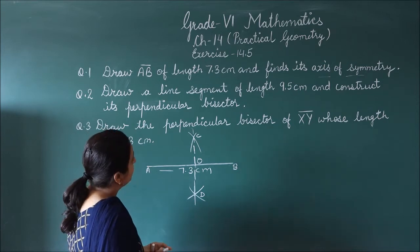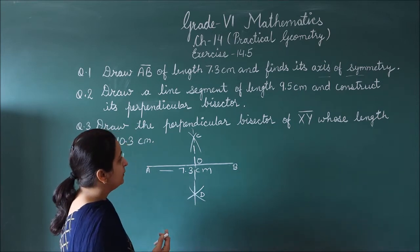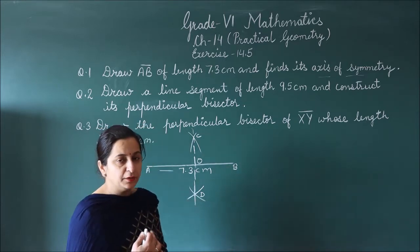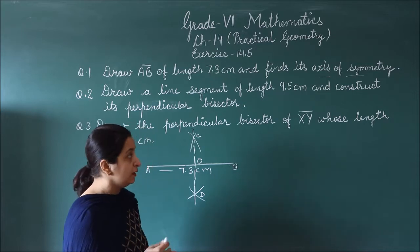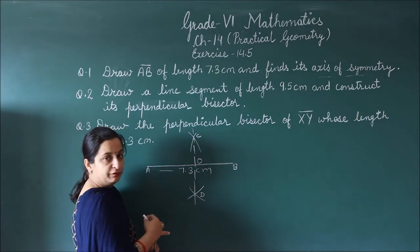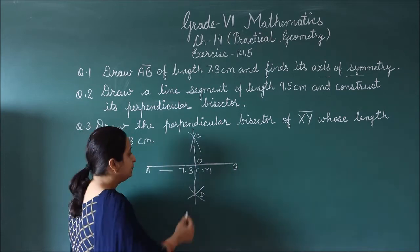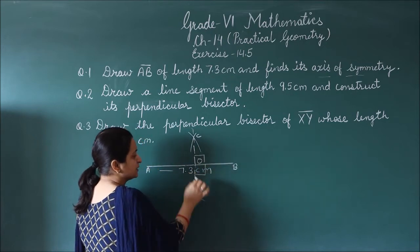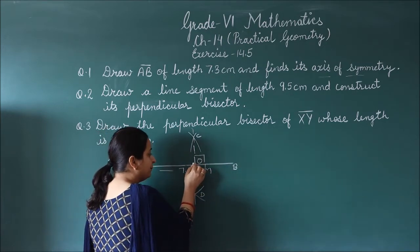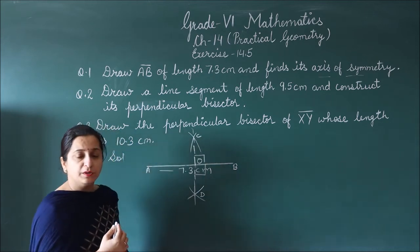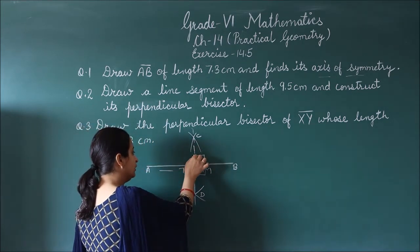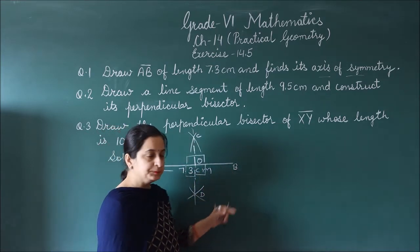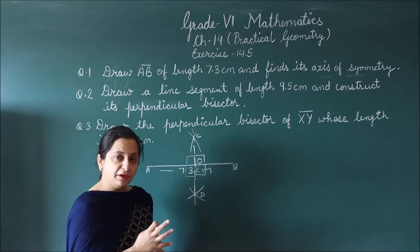Question number 2: draw a line segment of length 9.5 cm and construct a perpendicular bisector. You draw a line segment of 9.5 cm. Perpendicular means two lines or line segments that meet at an angle of 90 degrees — that is perpendicular.